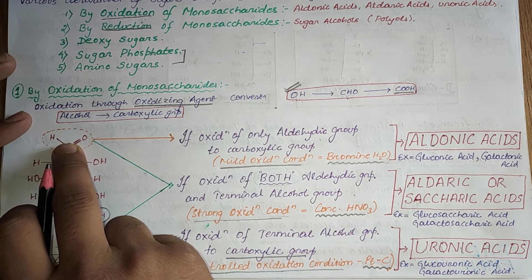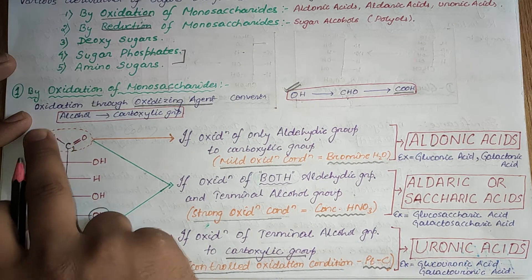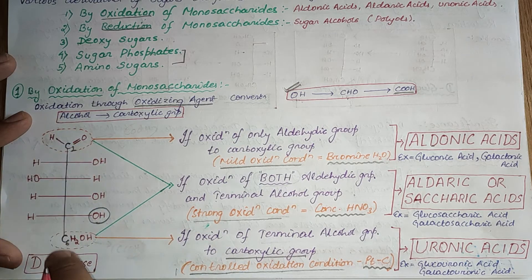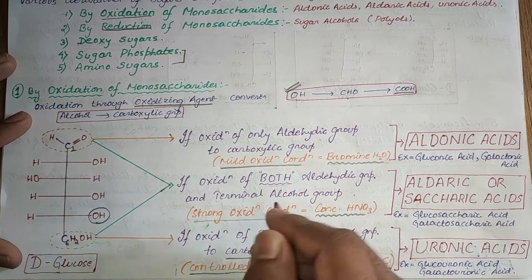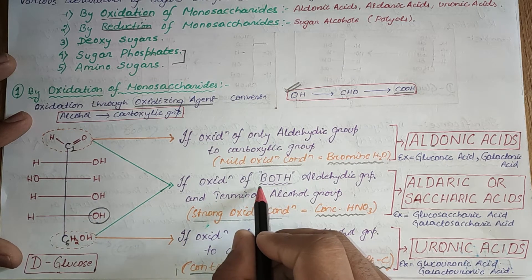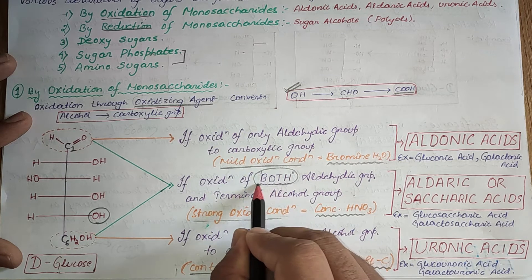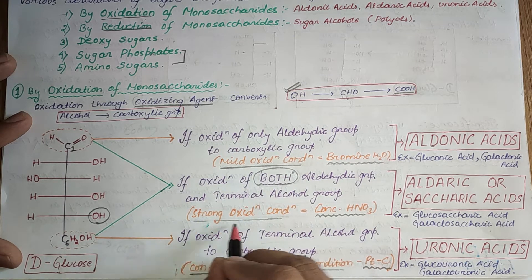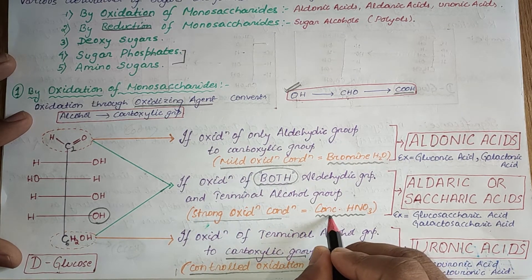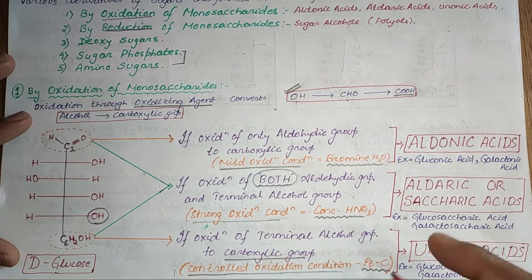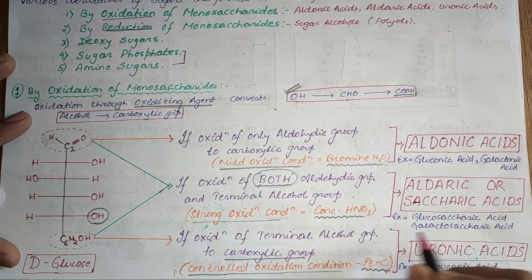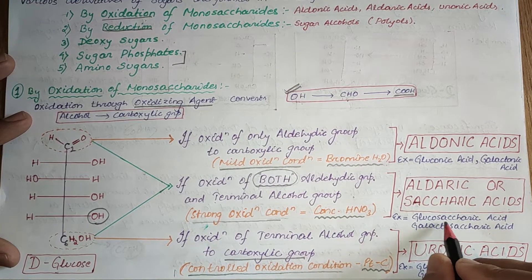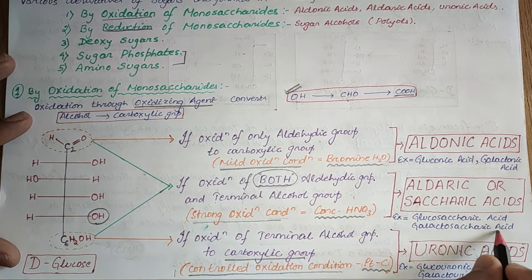If both the aldehydic group and the terminal alcoholic group undergo oxidation to carboxylic groups under strong oxidation conditions — that is, concentrated nitric acid — then the products are called aldaric or saccharic acids. Examples include glucosaccharic acid and galactosaccharic acid.